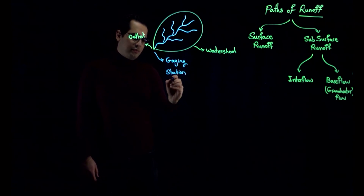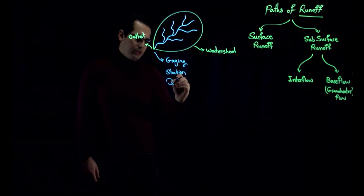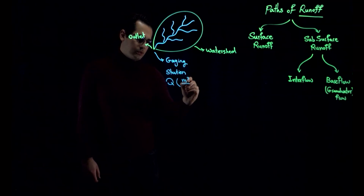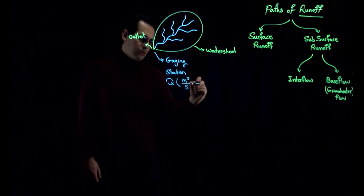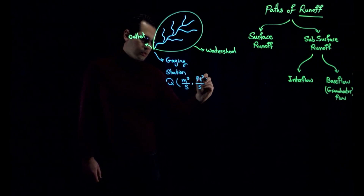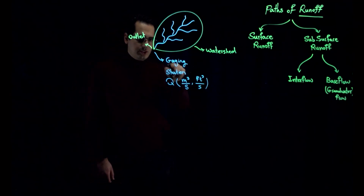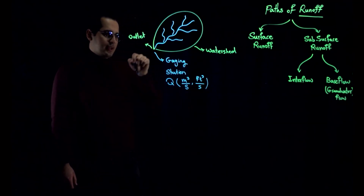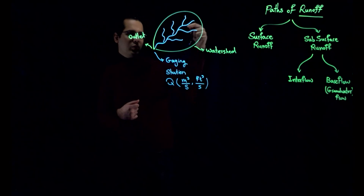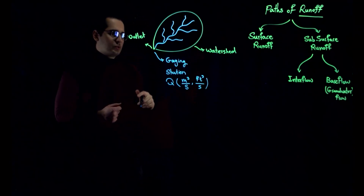When I talk about the flow of water, I am going to denote it by Q. The units for Q are volume divided by time — typically cubic meters per second or cubic feet per second. We have a gauging station right at the outlet that measures the flow out of this watershed.